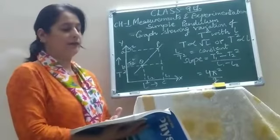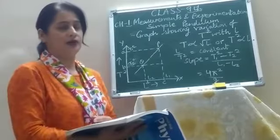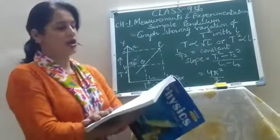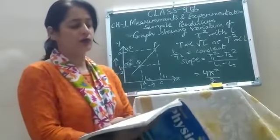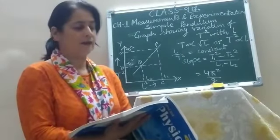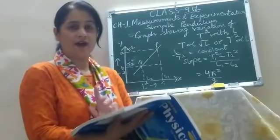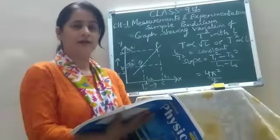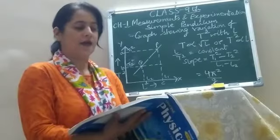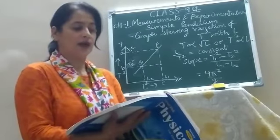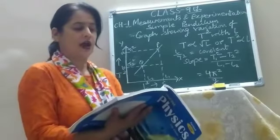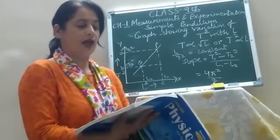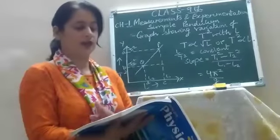This experiment is repeated for different lengths of the pendulum, and the observations are recorded in a table. On page number 23 of your book, there is a table given. If you observe it carefully, for a length of 25 centimeters, the time for 20 oscillations is 20 seconds. So the time period is t divided by 20, that means 20 upon 20, which comes out to be 1.0 second.